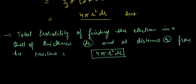From the above formula, what would be the probability for finding the electron at r equals to 0? The probability would be 0.